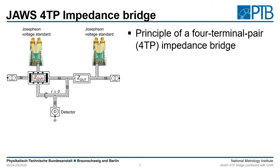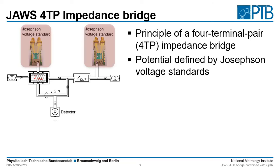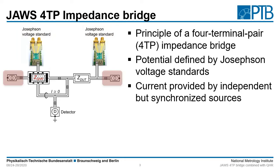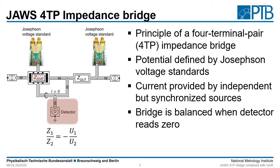Let me now show you a very simplified model of our four terminal pair impedance bridge. The potential definition is made by Josephson voltage standards. The measurement current is applied by two independent but synchronized current sources. If we apply the potential and currents correctly in amplitude and phase, we achieve that the detector reads zero, and then the impedance ratio is directly given by the ratio of the applied voltages.